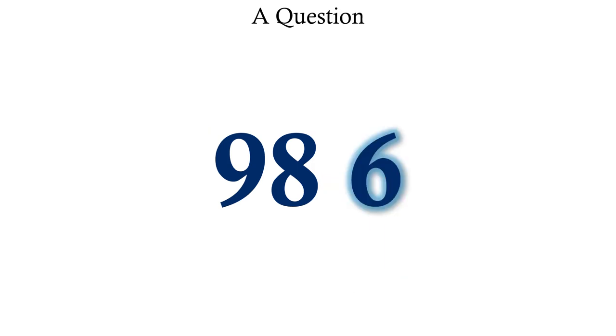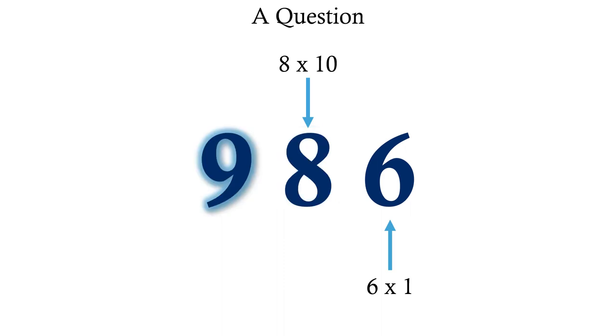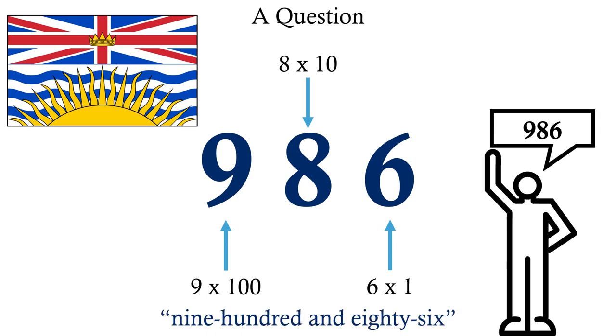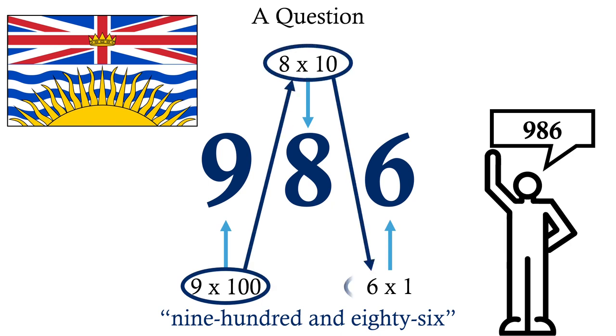This 6 here represents 6 units, the 8 represents 8 tens, and the 9 represents 900s. This is useful to us as English speakers, because when we read the number out or spell it in full, we say 986, starting with the largest value first, and then getting smaller.